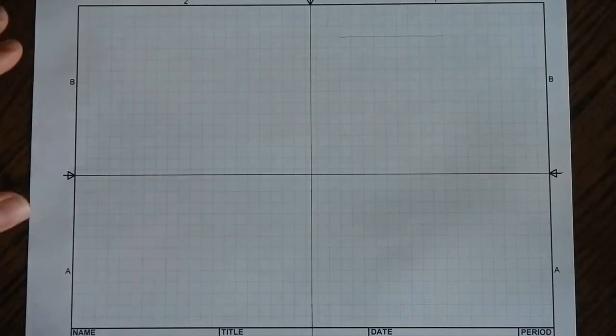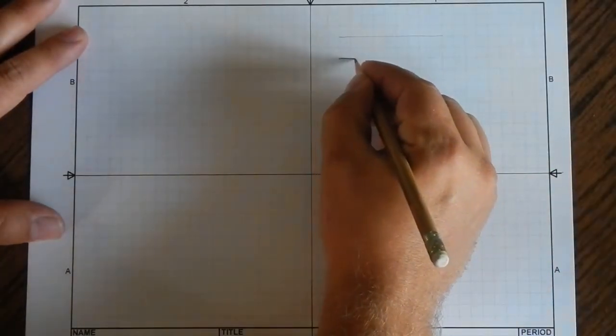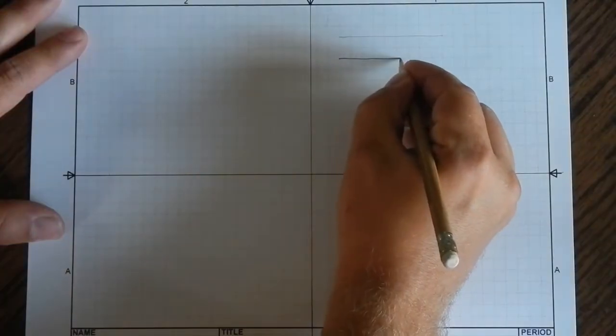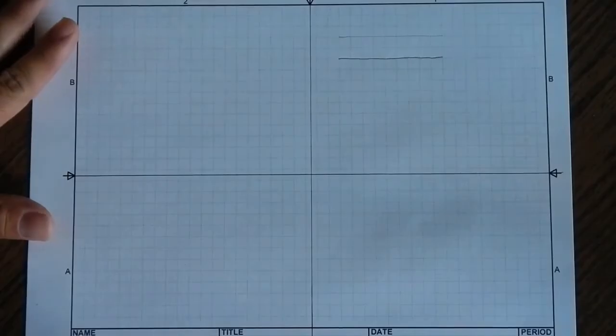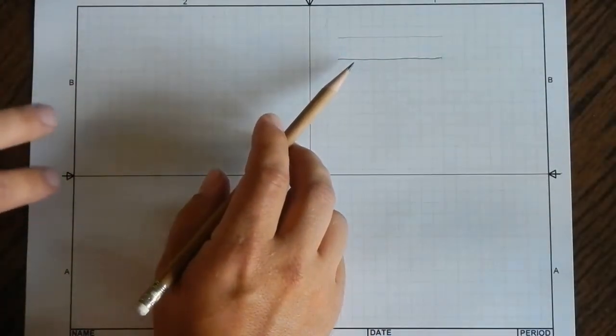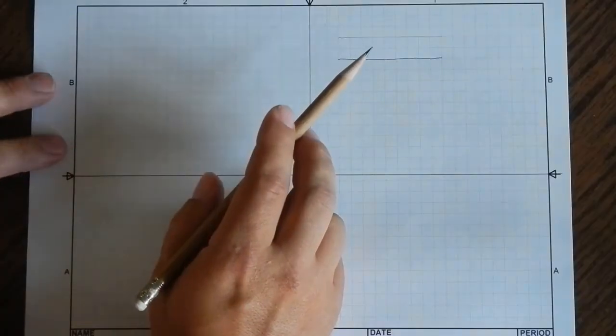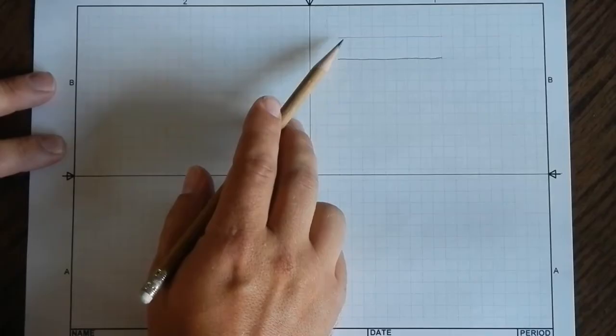The second type of line, an object line, is going to look just like a construction line, but this is going to be thick, solid, easy to see. You can see the difference in the thin versus thick line. This is an object. This is what we want to see at the end. This will be erased at the end of the sketch.